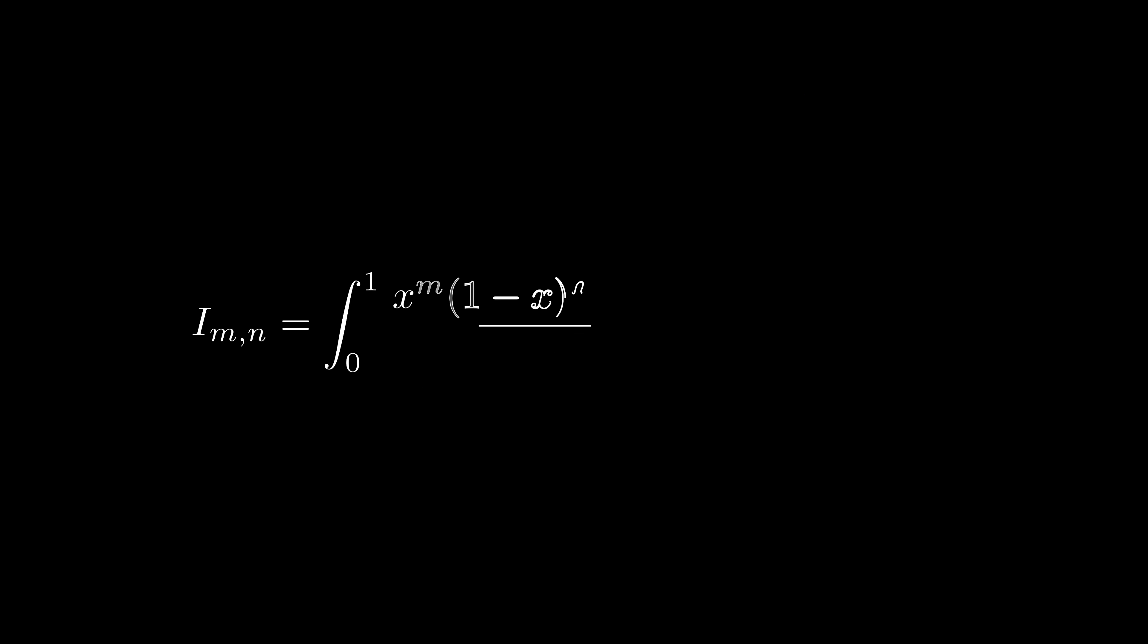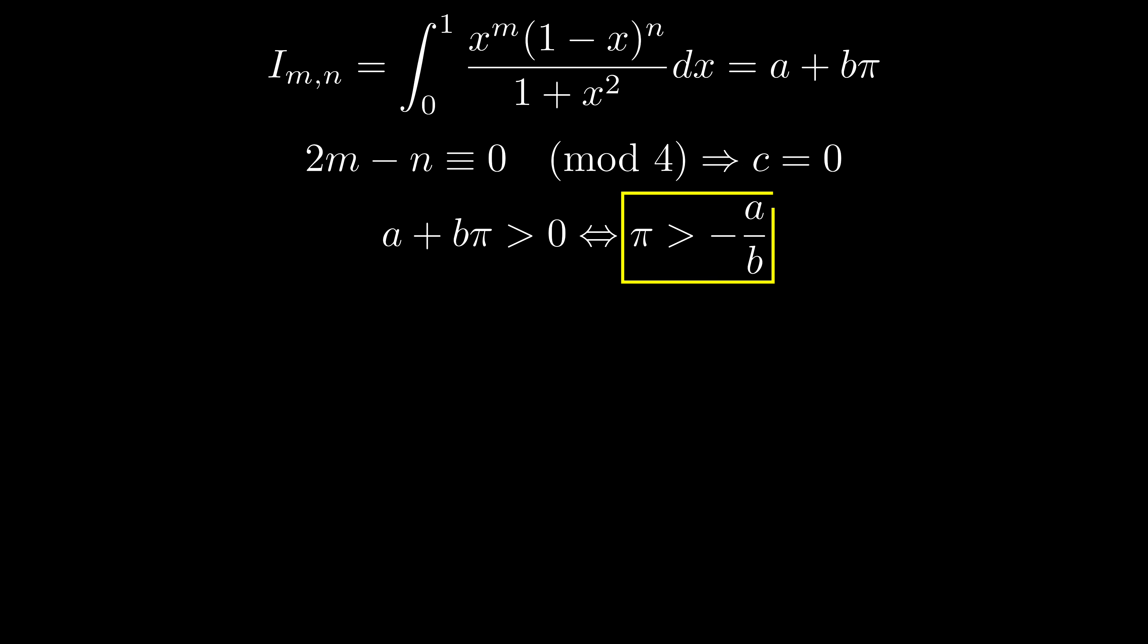Back to the formula. Blackhouse proved that if the following condition is satisfied, then c is 0. The positivity of this integral indicates that pi has a lower bound of negative a over b. But b can be negative, so sometimes this is an upper bound. I'm just going to use b is positive for the simplicity of discussion.